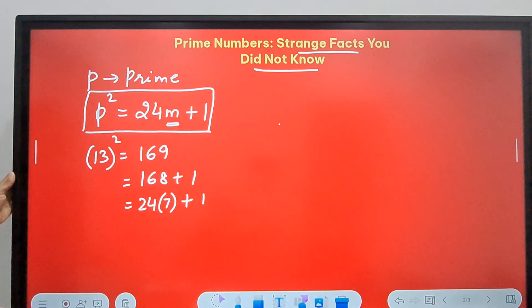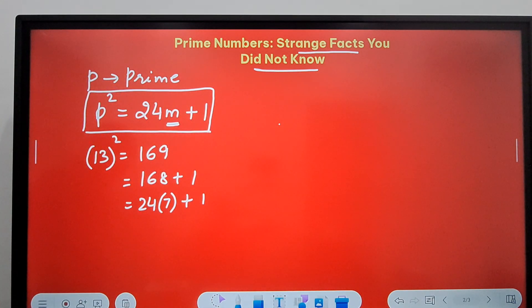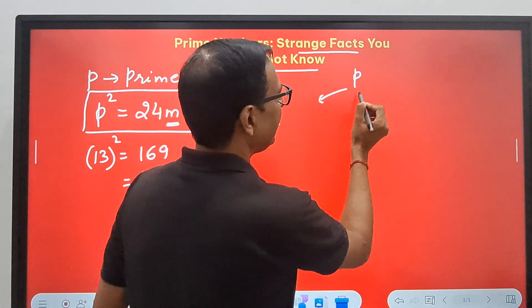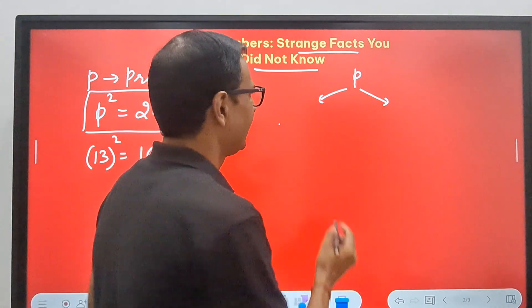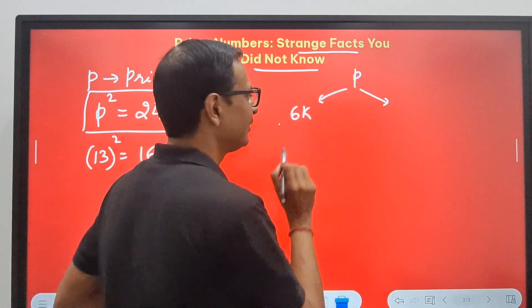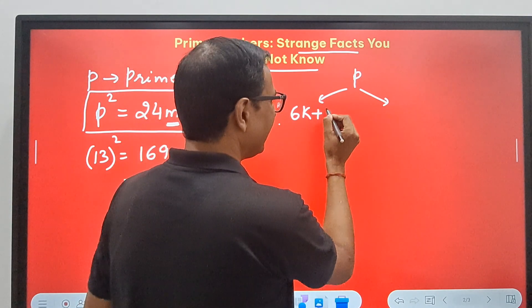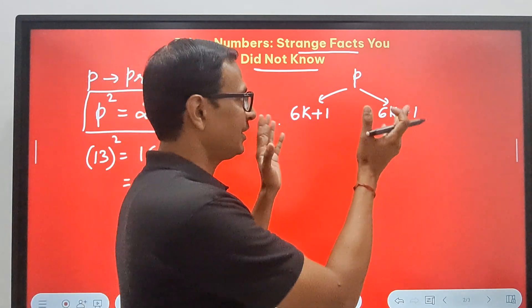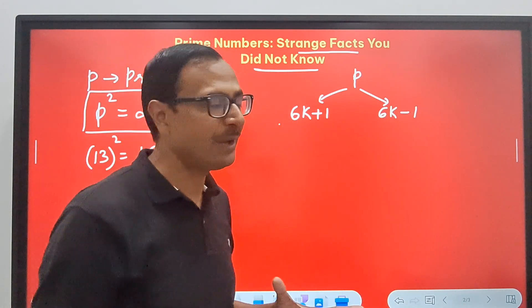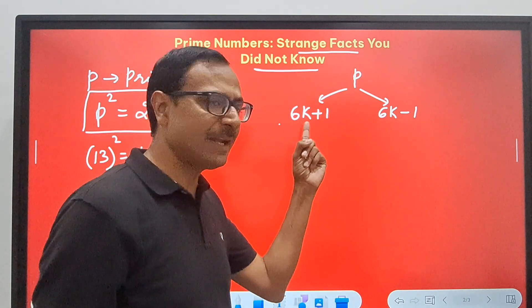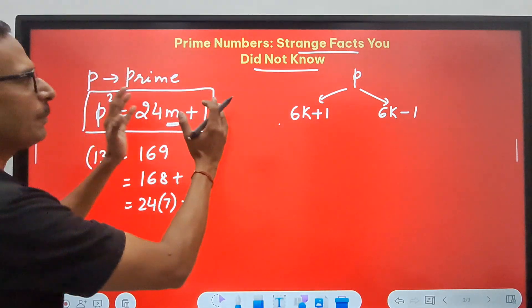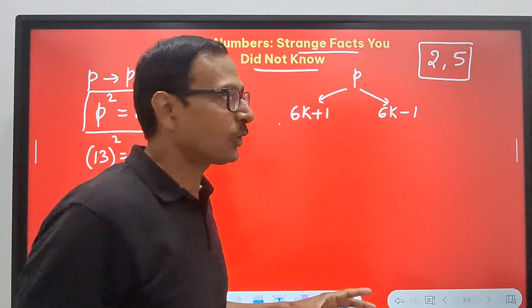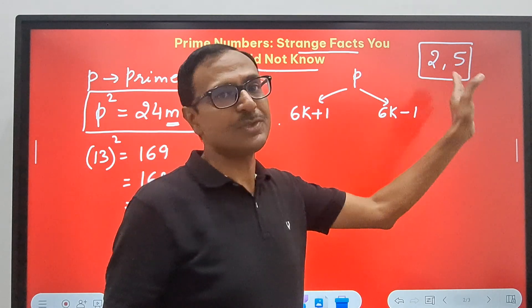Every prime number will follow this particular property. Now let's understand why this property works. For that, we should know that every prime number p can be written in two forms: 6 times something plus 1 and 6 times something minus 1. Every prime number is always written in these two forms. Mind you, whenever I tell you these properties, we're not talking about 2 and 5. We're talking about numbers above 5.